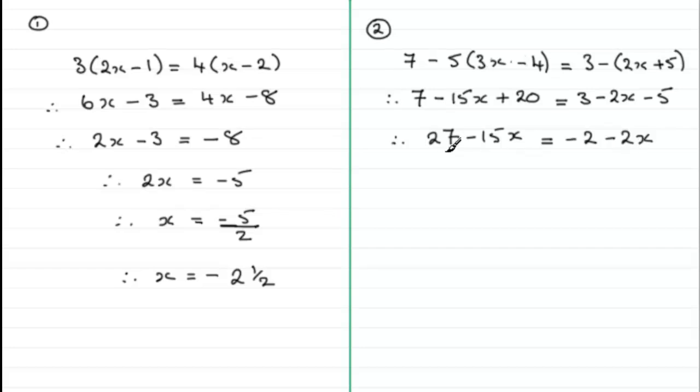And this brings us down to the type of question we've been dealing with in previous tutorials. And I showed you that it's generally a good idea to check out which side has the bigger x term. And minus two x is bigger than minus fifteen x. So what I'm going to do is get rid of the minus fifteen x by adding fifteen x to both sides. So we've got twenty seven here. Minus fifteen x plus another fifteen x just leaves us with that twenty seven.